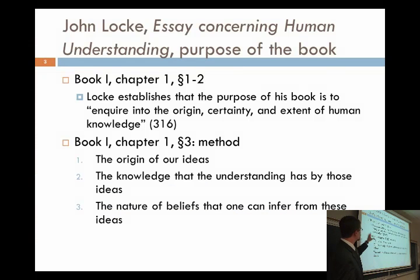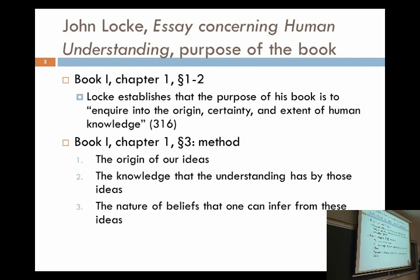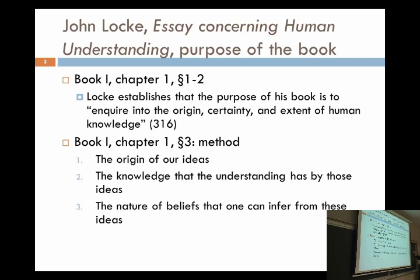In Book One, Chapter One, Sections One and Two, Locke tells us what he's up to in this essay — that the goal is to inquire into the origin, the certainty, and the extent of human knowledge. He lays out the structure: first, where do we get our ideas from? Second, he wants to understand the knowledge the understanding has through those ideas. Third, the nature of beliefs one can infer from those ideas.